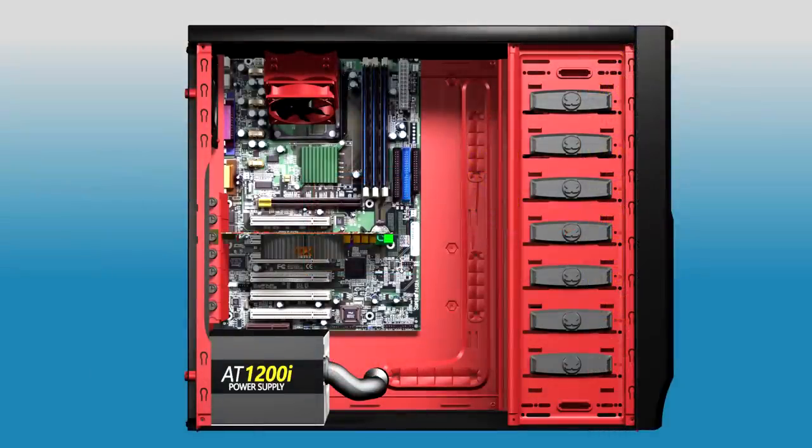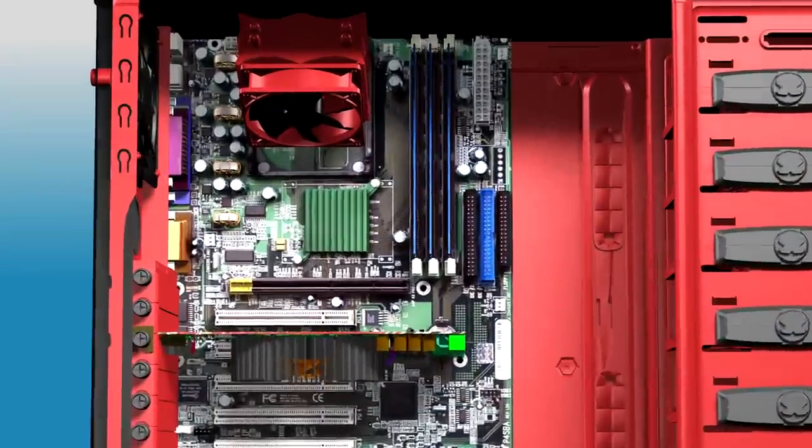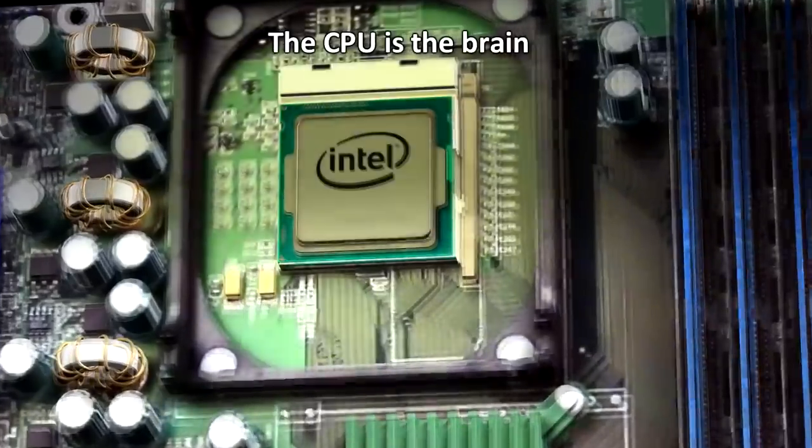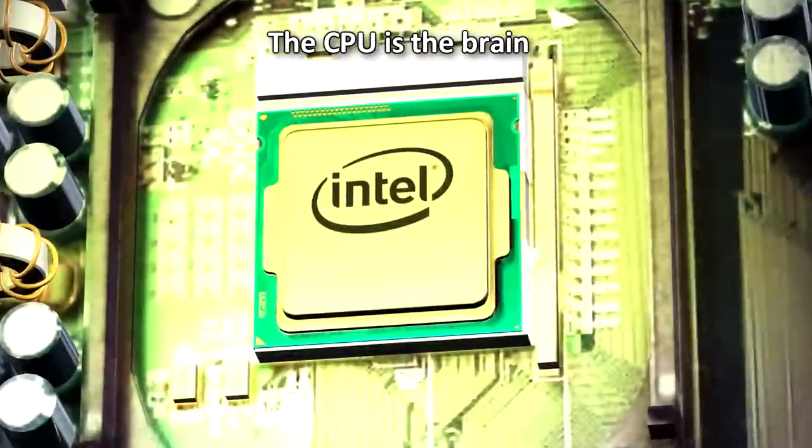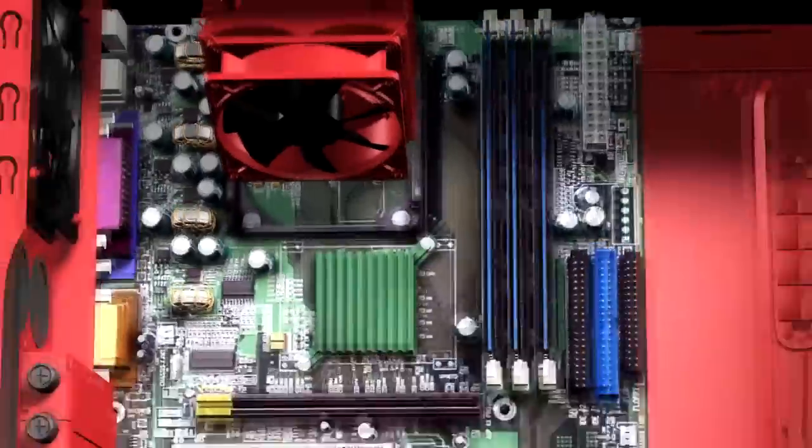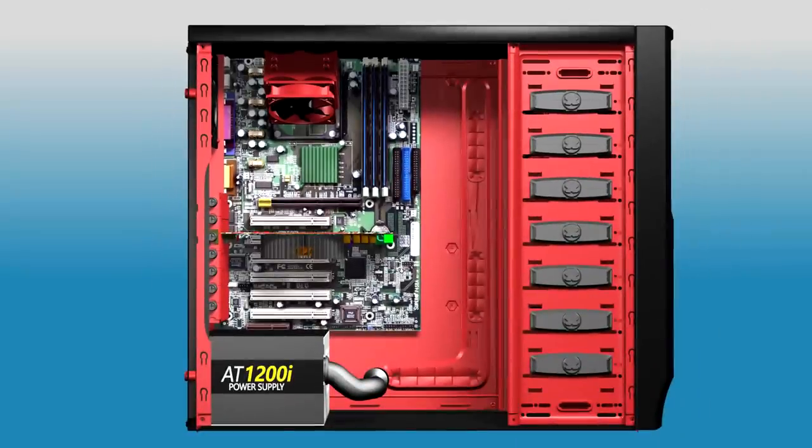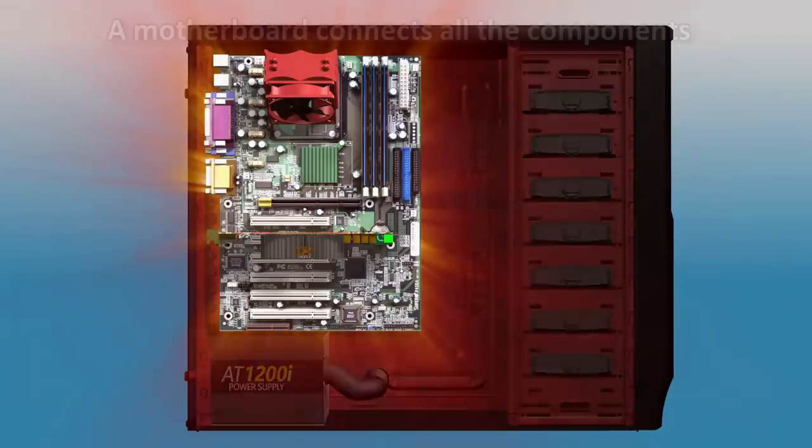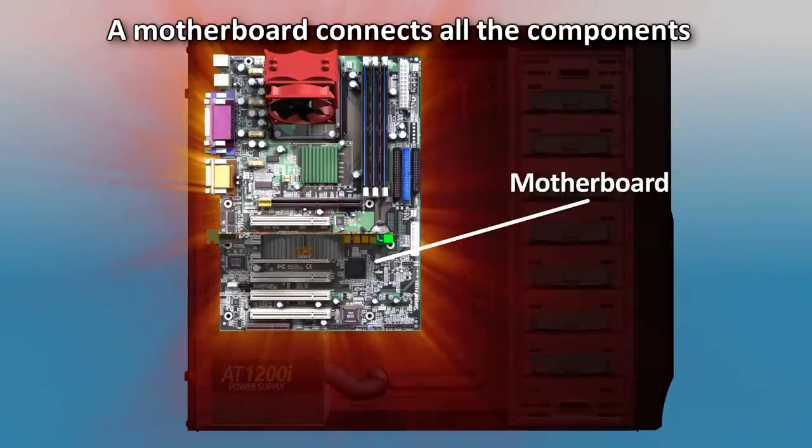Also necessary is some kind of central processing unit, or CPU. This is the brain of the computer that does the actual computation. We also need some device that connects all the different components together. This is the motherboard. It connects the CPU with the RAM storage and any other component necessary to make a functioning computer.